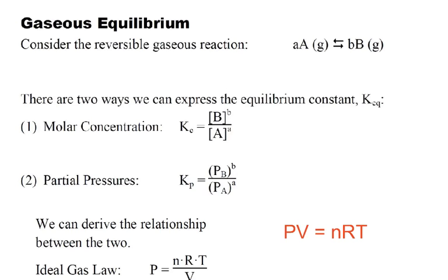So if we have an equation, just for example, A turns into B, and this is very generic, so AA and BB are the coefficients. We can write the equilibrium constant expression, just like we always have, Keq products over reactants raised to the power of their coefficients.